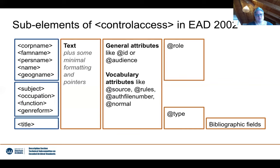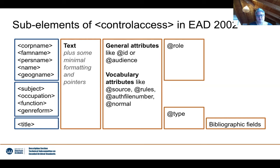This is how the sub-elements of control access in EAD 2002 look. There is a little variation — some parts apply to all of them and some only to a specific sub-group. All sub-elements of control access can have text directly in the element, and all have general attributes like the audience attribute or the ID attribute. Then there are vocabulary attributes that allow you to provide more information about where the term comes from. The agent and place elements — including corp name, family name, personal name, and geogname — also include the attribute role.